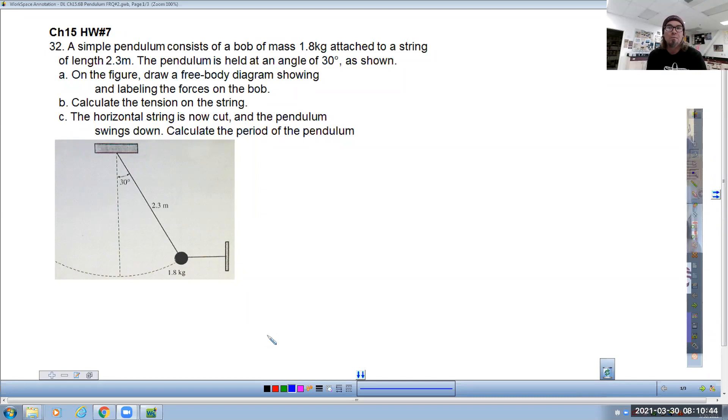So there's a skill here that probably is good for us to recognize. A simple pendulum consists of a bob of mass 1.8 kilograms attached to a string of length 2.3 meters. The pendulum is held at an angle of 30 degrees as shown. Draw a free body diagram showing and labeling the forces acting on the bob.